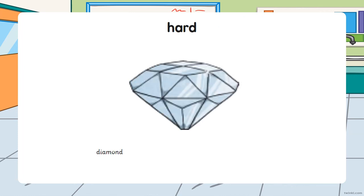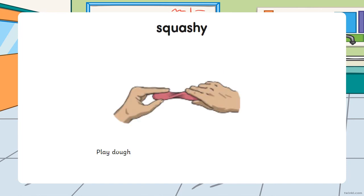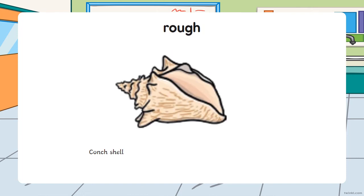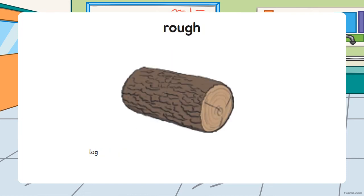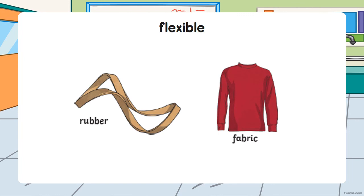Let's look at some examples. A diamond is hard. A brick is also hard. Play-doh is squishy. Smooth pebbles are smooth. A conch shell is rough. A log is also rough. A spoon is shiny. A rubber band and fabric are flexible — they can be folded.